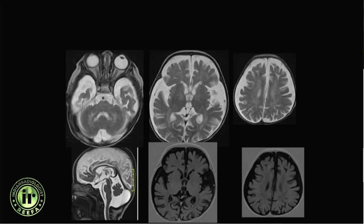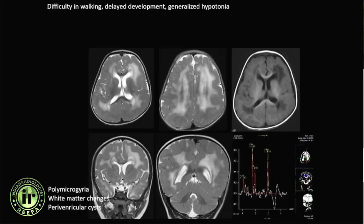In another case, the sylvian fissures are wide open and there is signal abnormality seen in the dentate nuclei. The diagnosis here is glutaric aciduria type 1.